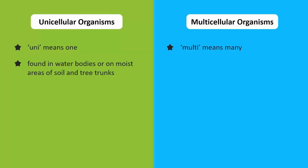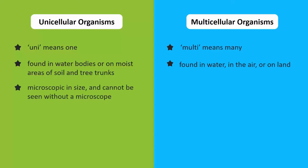Multicellular organisms are found in water, such as fish; in the air, such as an eagle; or on land, such as lions or a tree. Most unicellular organisms are microscopic in size, which means they can only be seen with the help of a microscope.